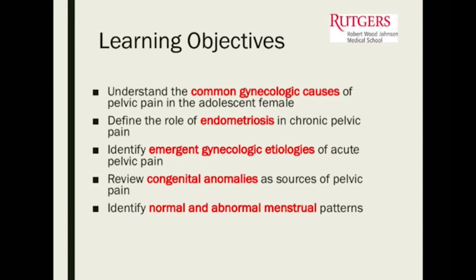It's really important to be able to quickly go through the differential of emergent gynecologic etiologies, review some of the congenital anomalies unique to the adolescent population in which a patient can present with pelvic pain, and also to think about normal and abnormal menstrual bleeding patterns as well.